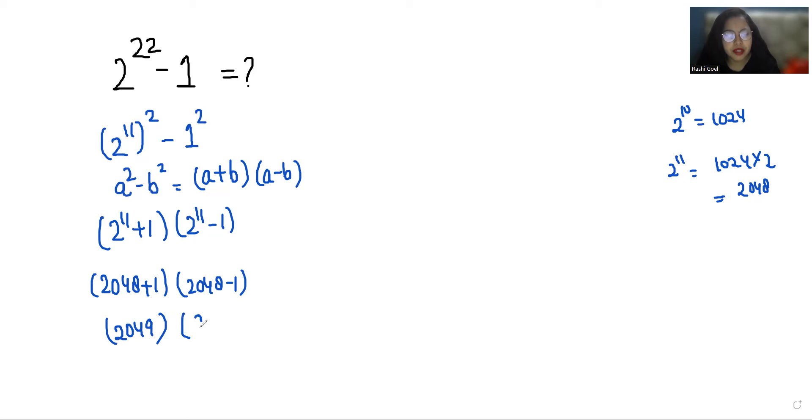...and 2048 minus 1 is 2047. So we can write this as 2000 plus 49 and this as 2000 plus 47. Now we can multiply directly: 2000 times 2000 is 400,000 plus 2000 times 47 is 94,000. Similarly, 49 times 2000 is 98,000 plus 49 times 47 is 2303. And when we add all these terms...